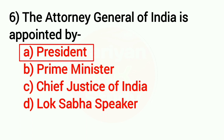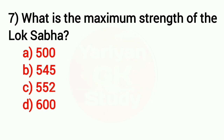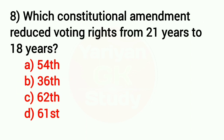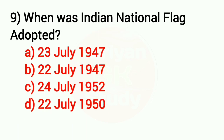Question number 7: What is the maximum strength of the Lok Sabha? Answer: Option C — 552. Question number 8: Which constitutional amendment reduced the voting rights age from 21 years to 18 years? Answer: Option D — the 61st Amendment.